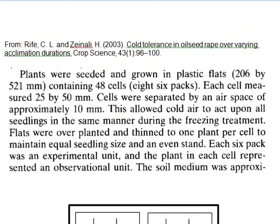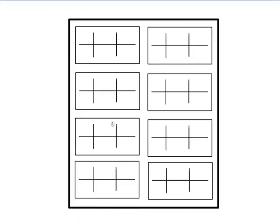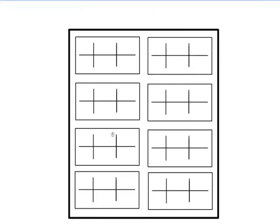Our second example comes from a crop sciences paper. In this example, seedlings were grown in a large tray — something like this. This large tray had eight inner trays, and each one of those inner trays had six cells where a seedling was planted.